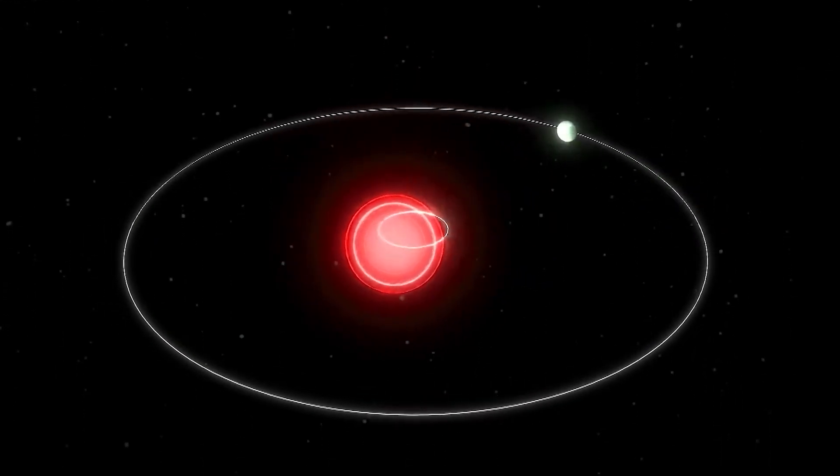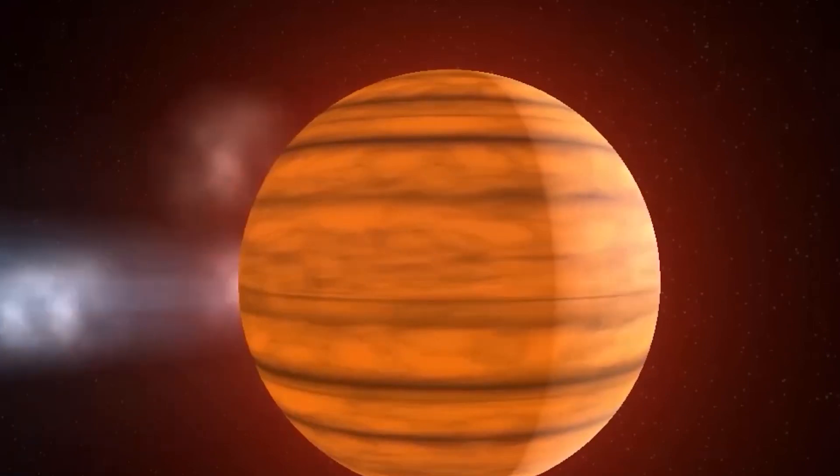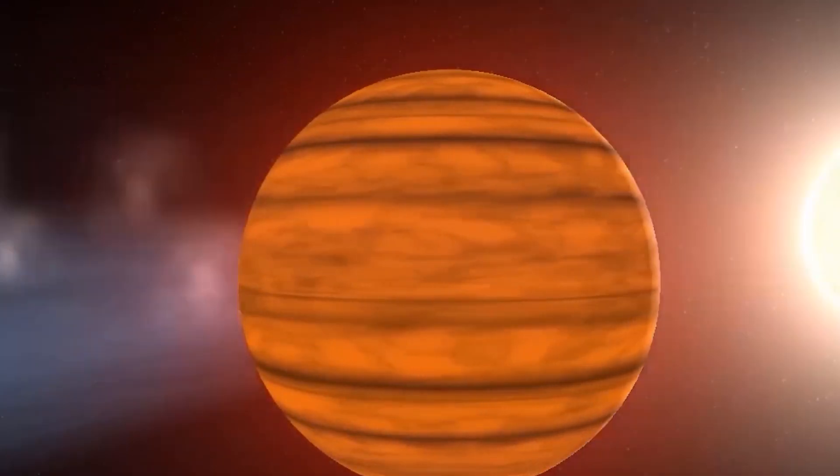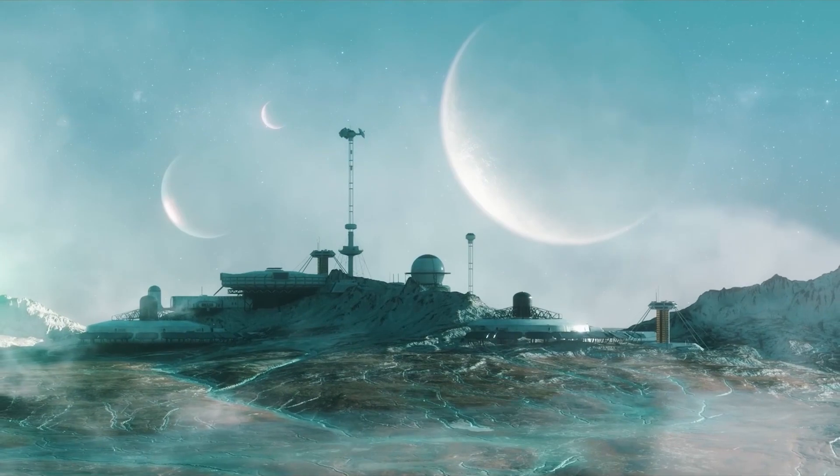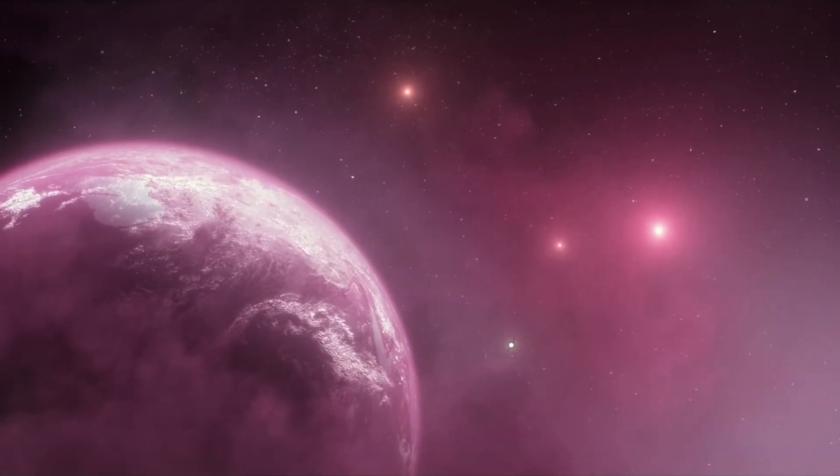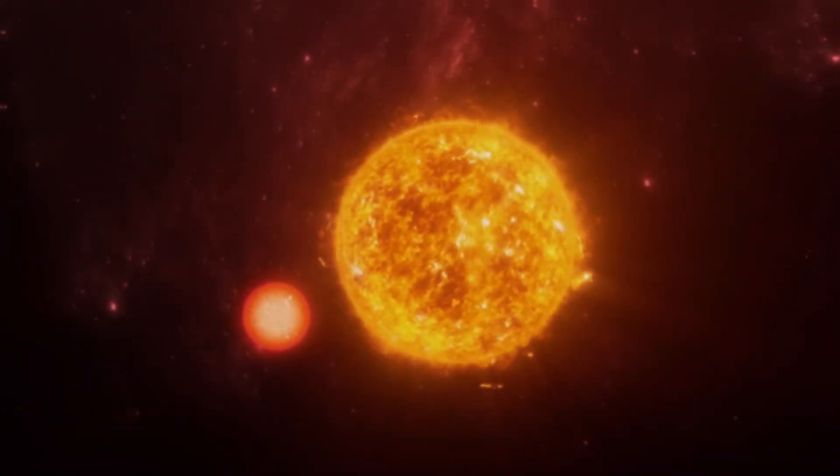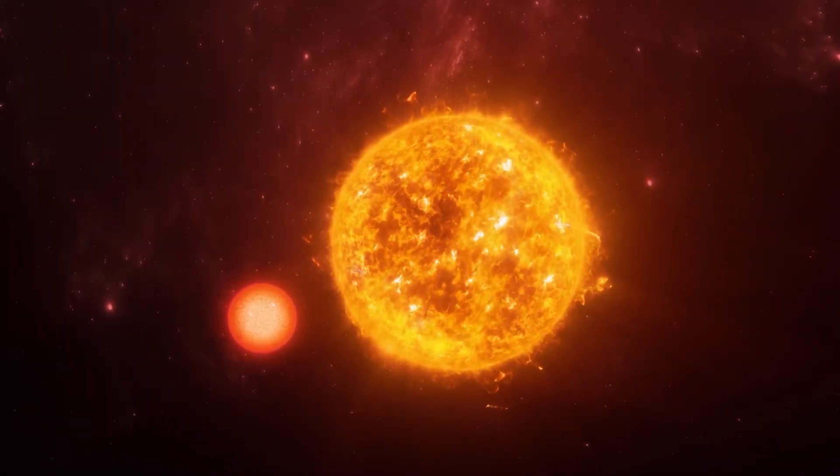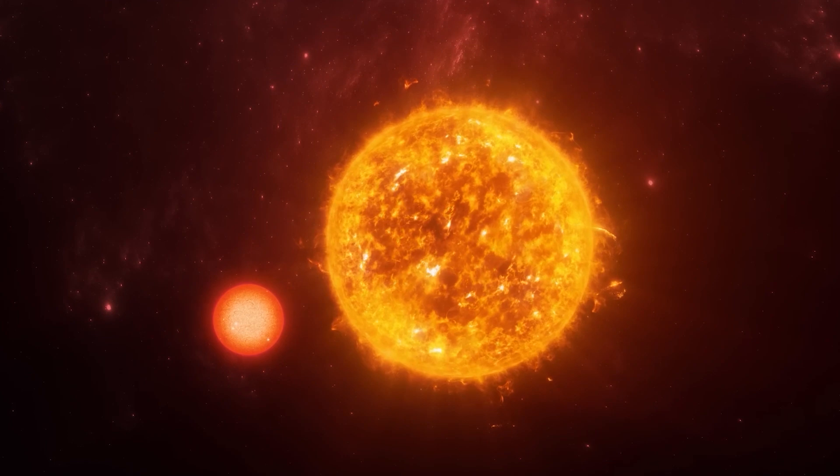Another theory is that these planets could result from gravitational interactions with other objects in their solar systems, such as planets or moons. These interactions could disrupt the normal processes of planet formation and allow gas giants to form around small stars like TOI-5205.